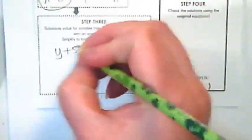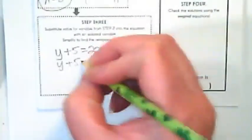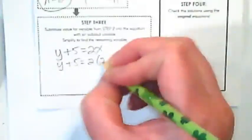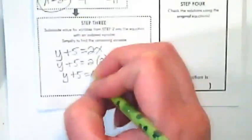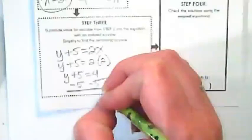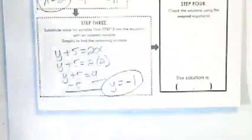We're going to go back up to those original equations and pick the easiest one to plug it into. Y plus 5 equals 2x looks like the easiest to me. And I end up with y equals negative 1.